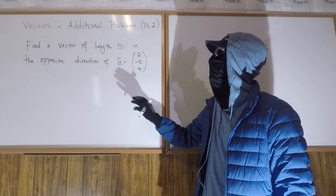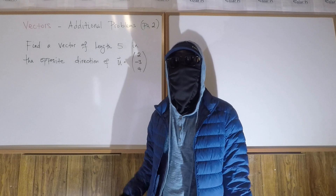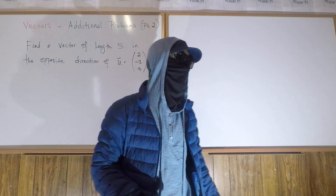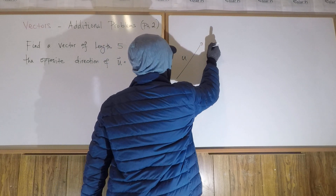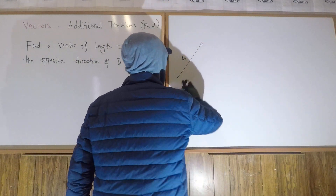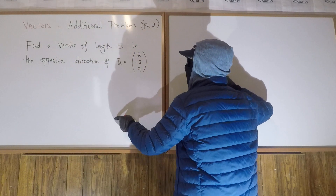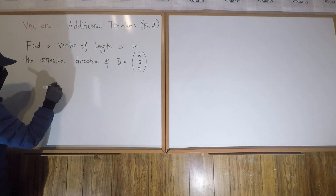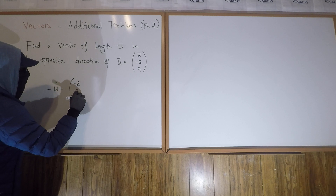Alright, cool. Now immediately we know that negative u is going to point in the opposite direction of vector u. I could draw vector u in the three-dimensional coordinate plane, but other than adding time to this video there's no big value in that. So just follow: if this is vector u and it points this way, then negative u is of the same length but points in the exact opposite direction. So negative u is (-2, 3, -4).